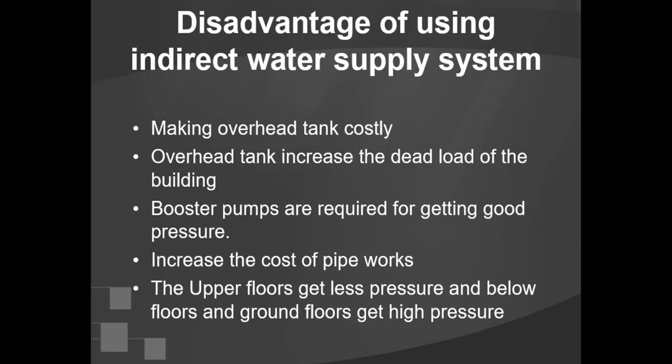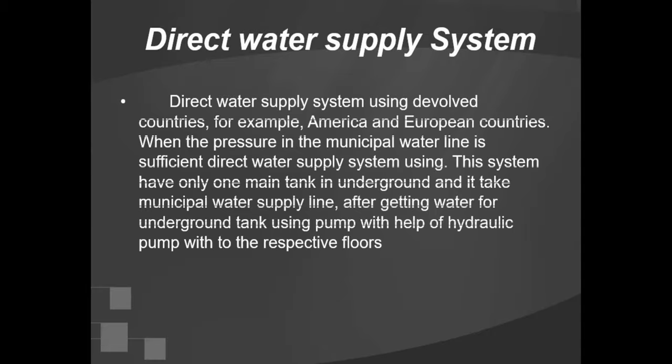The second water supply system is the direct water supply system. This system is used in developed countries, for example America and European countries. When the pressure in the municipal water line is sufficient, the direct water supply system is used. This system has only one main underground tank, and water from the municipal supply line is pumped from the underground tank to respective floors using a hydraulic pump.